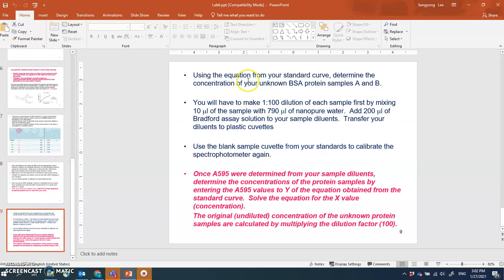With your unknown protein samples, I want you to make dilutions - maybe 1 to 100 dilution. Each tube maybe has 50 or less than 100 microliters, so take 10 microliters of each sample and mix that with 790 microliters of water, which gives you 800 microliters. Then add 200 microliters of the Bradford reagent and mix them up. Then do the absorbance measurements.